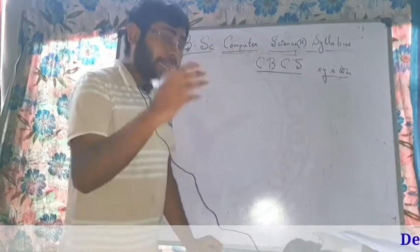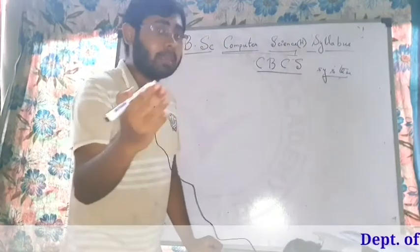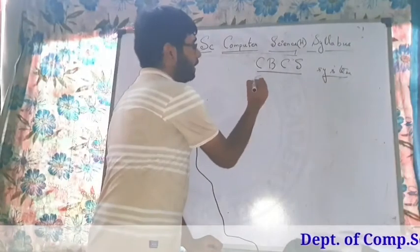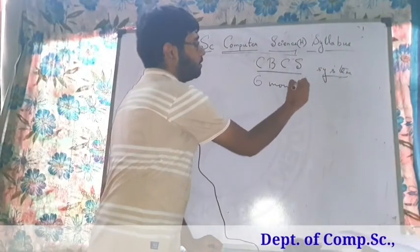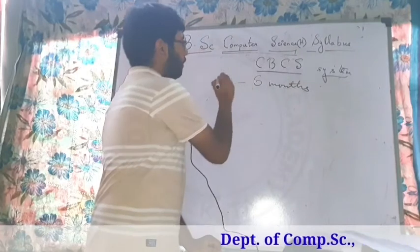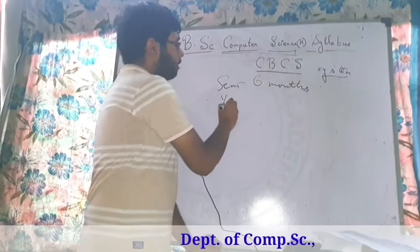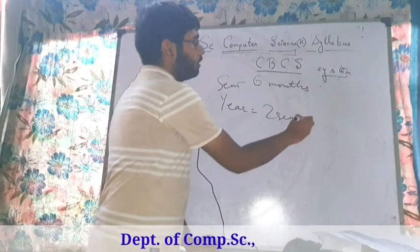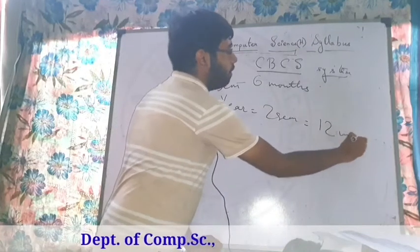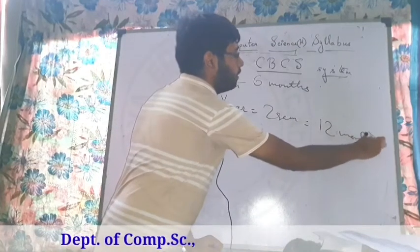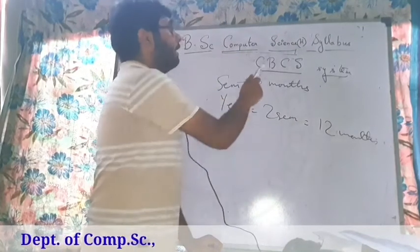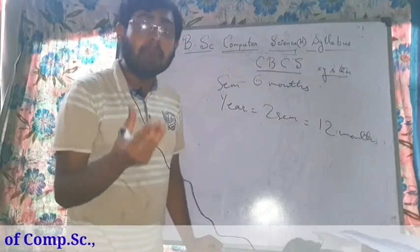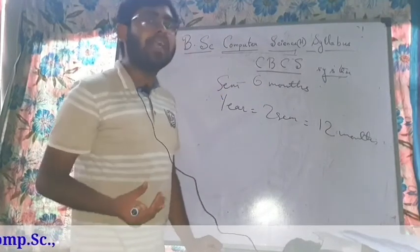Each year is divided into two semesters, with the duration of each semester being six months, so one year equals two semesters or 12 months. CBCS means that in each paper there is some credit or weightage assigned to that paper.